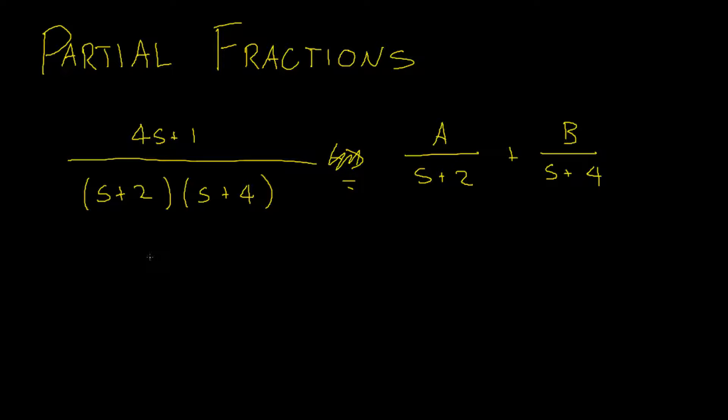On the left-hand side, this would give us 4s plus 1 and then on the right-hand side, we would have A, the s plus 2 would cancel and then we'd be left with s plus 4 plus the B term where the s plus 4 would cancel and you'd be left with s plus 2.